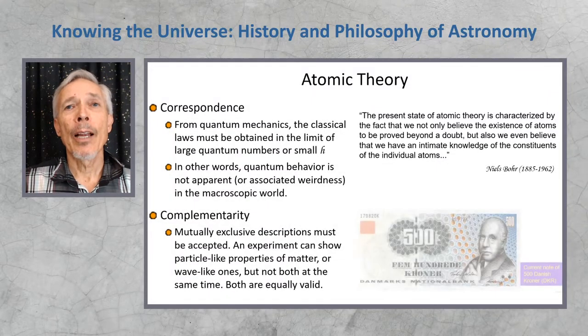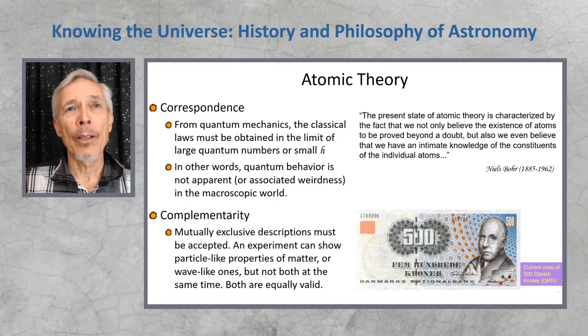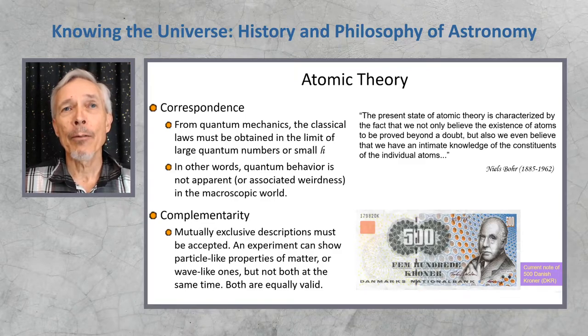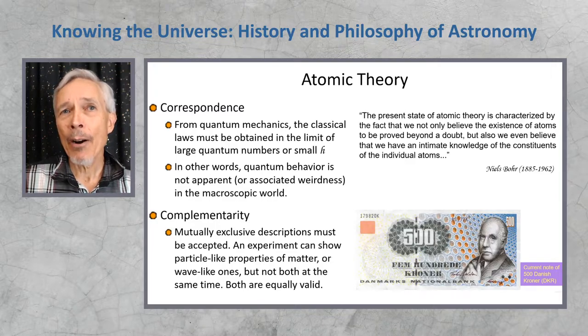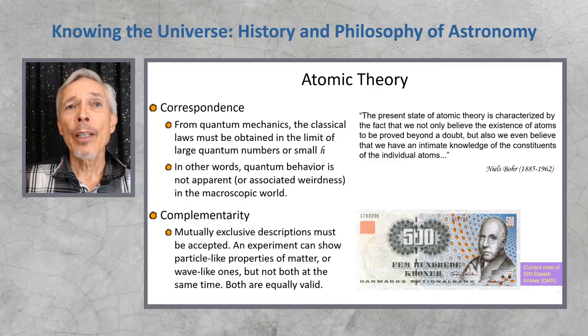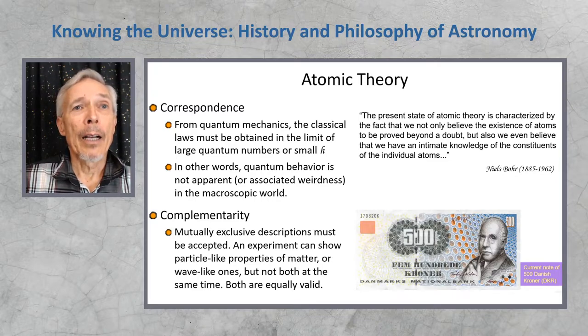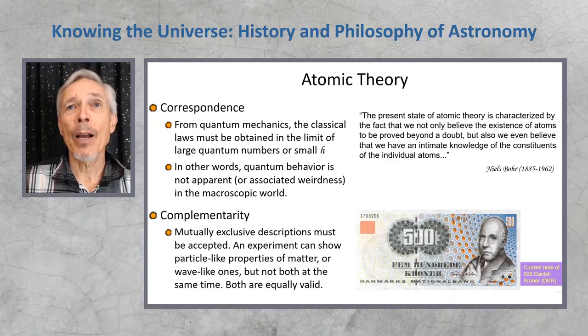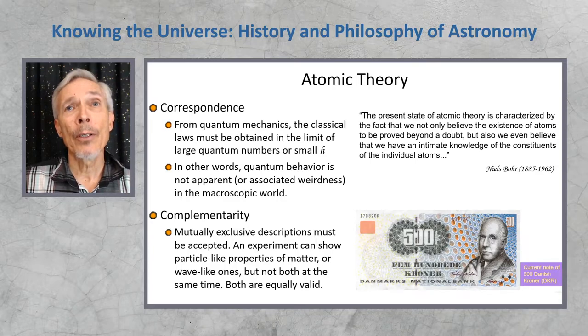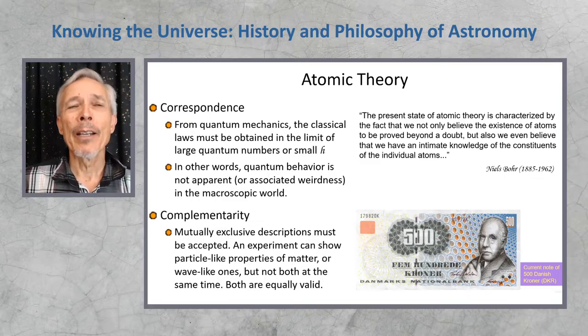Atomic theory has several principles at its foundation, and these come particularly from the work of Niels Bohr. From quantum mechanics, we must somehow retrieve the normal classical laws that work so well for large objects, and so it was the case that the people working on the theory had to show that it tended towards the classical mechanics result in the limit of large numbers of atoms. So quantum behavior is not apparent in the macroscopic world, and we have to have a theory that says why it's not. Another idea was complementarity, the fact that mutually exclusive descriptions must be accepted. This is a more uncomfortable implication of quantum theory. An experiment might show a quantum had particle-like properties or wave-like properties, but not both at the same time. They are equally valid. Niels Bohr said, The present state of atomic theory is characterized by the fact that we not only believe the existence of atoms to be proved beyond a doubt, but also we believe that we have an intimate knowledge of the constituents of the individual atoms.